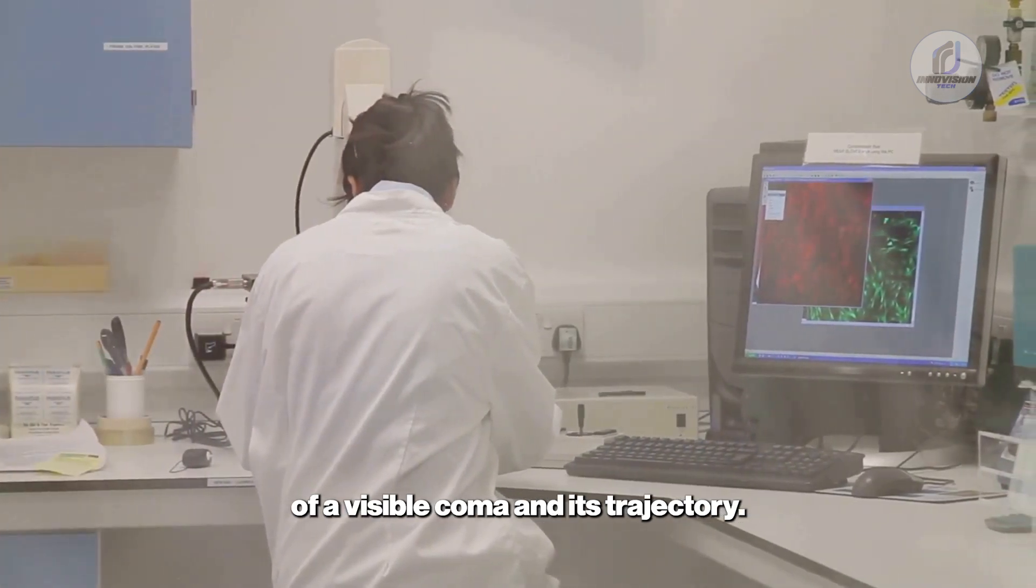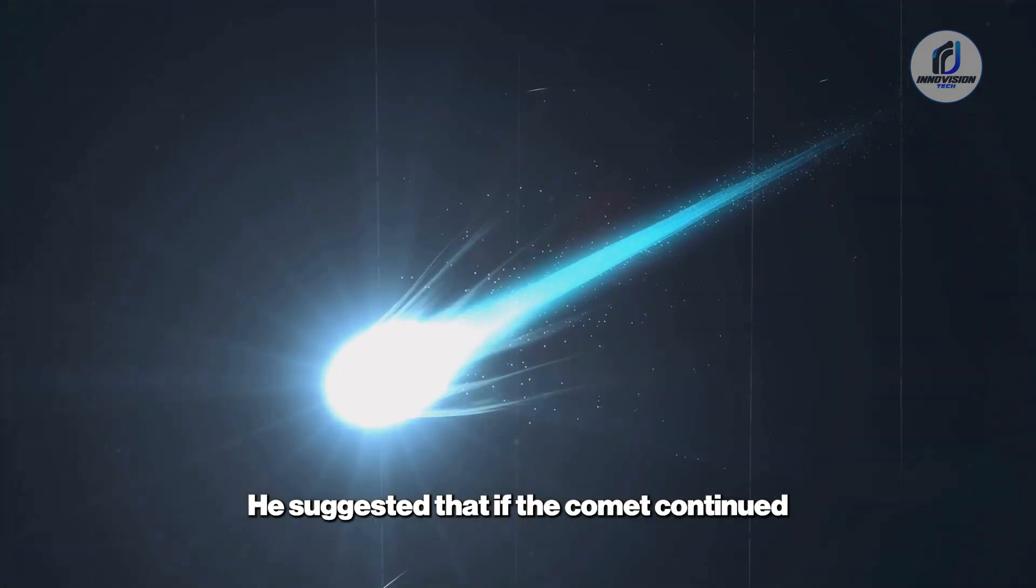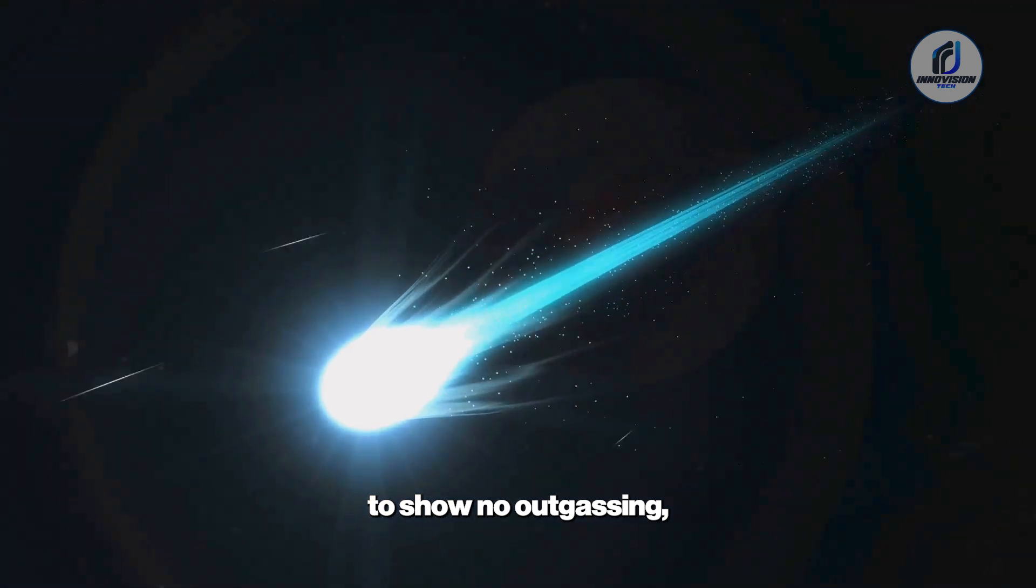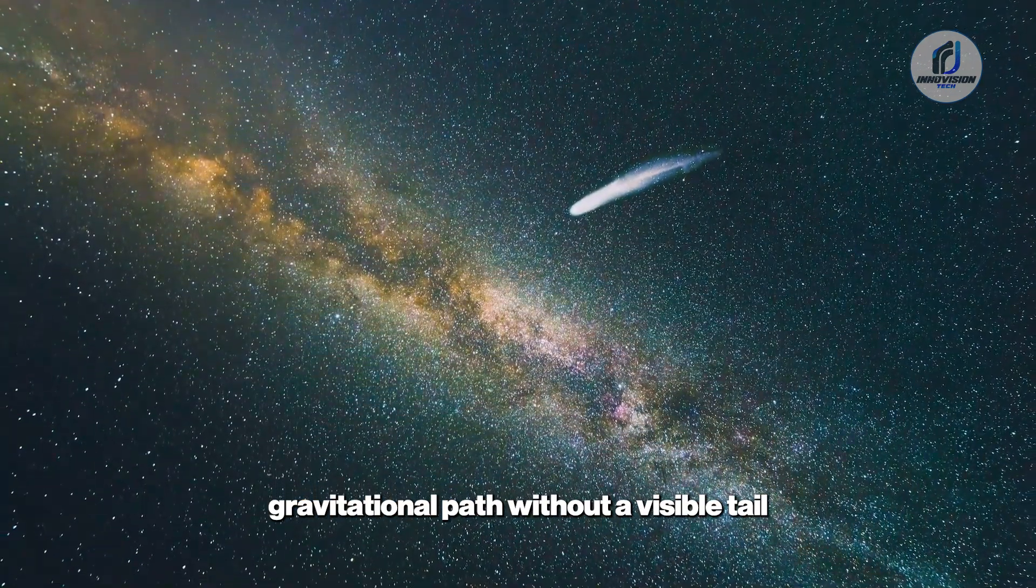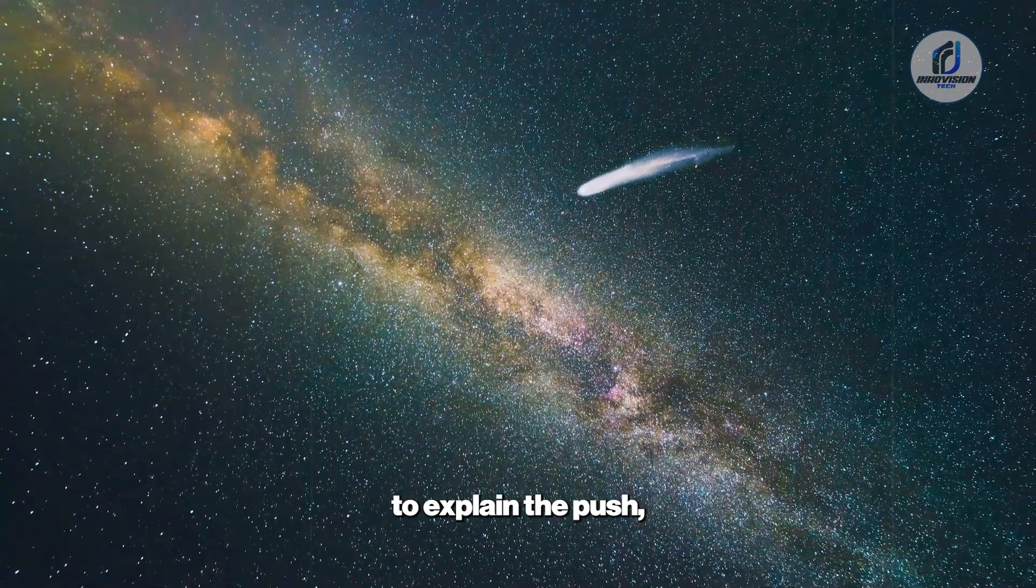He suggested that if the comet continued to show no outgassing, or if its path deviated from a purely gravitational path without a visible tail to explain the push, it could be evidence of something artificial.